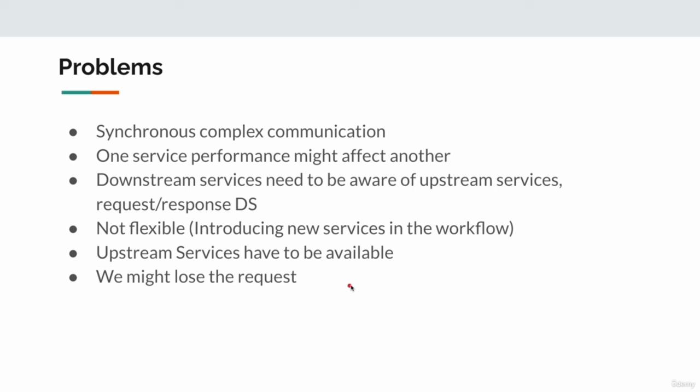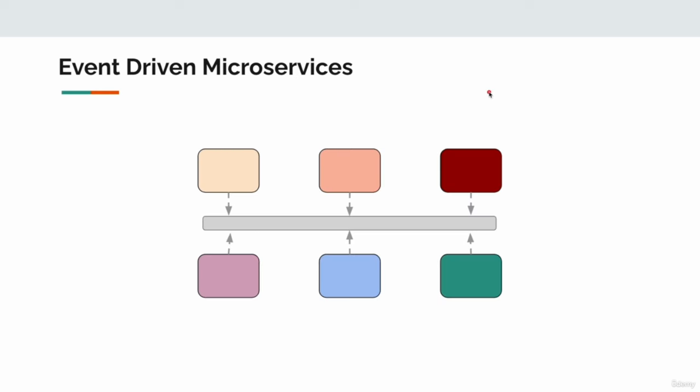In that case, we simply delegate and ask the caller to retry. Now let's see if event-driven microservices could help us. Event-driven microservices is an architectural pattern which focuses particularly on loosely coupled and asynchronous communication among microservices. We use some event bus — like Apache Kafka or Pulsar — through which we publish events or messages.